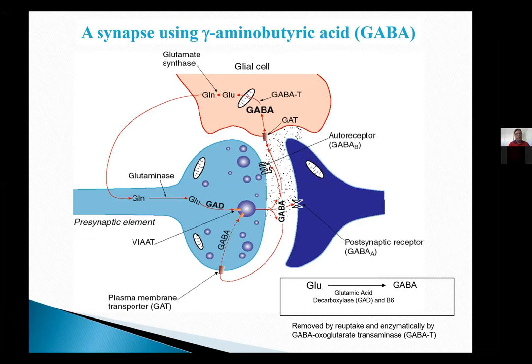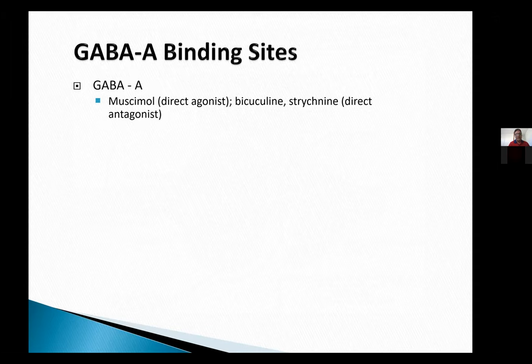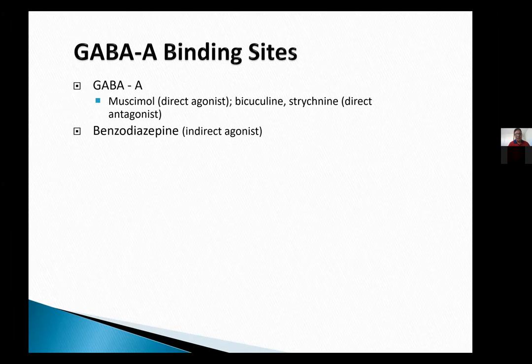Regarding GABA binding sites: the agonist is muscimol, and the antagonists are strychnine and picrotoxin, as well as cyclochulene, which is a research agent not approved as a drug. Benzodiazepines are indirect agonists — sometimes called co-agonists — because they do not bind to the primary site but have a separate binding site.